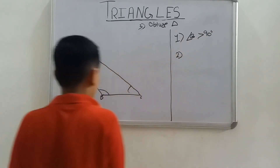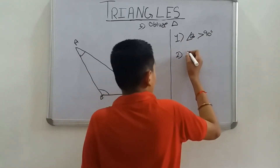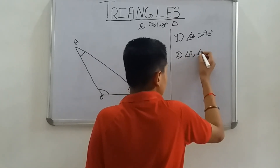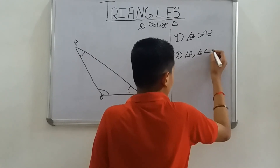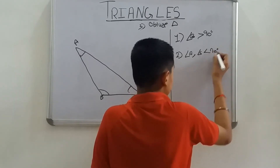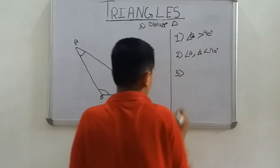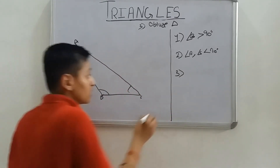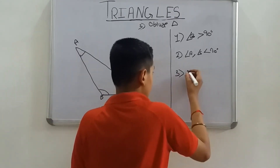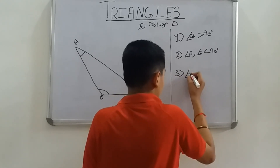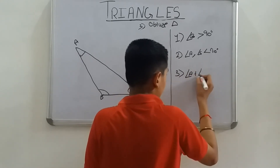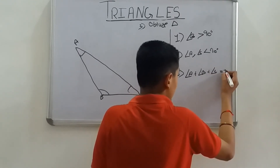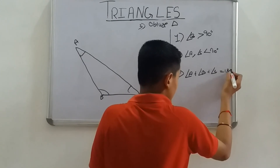Second property: angle A and angle C are less than 90 degrees. Third property: the sum of all the angles is equal to 180 degrees — angle A plus angle B plus angle C equals 180 degrees.